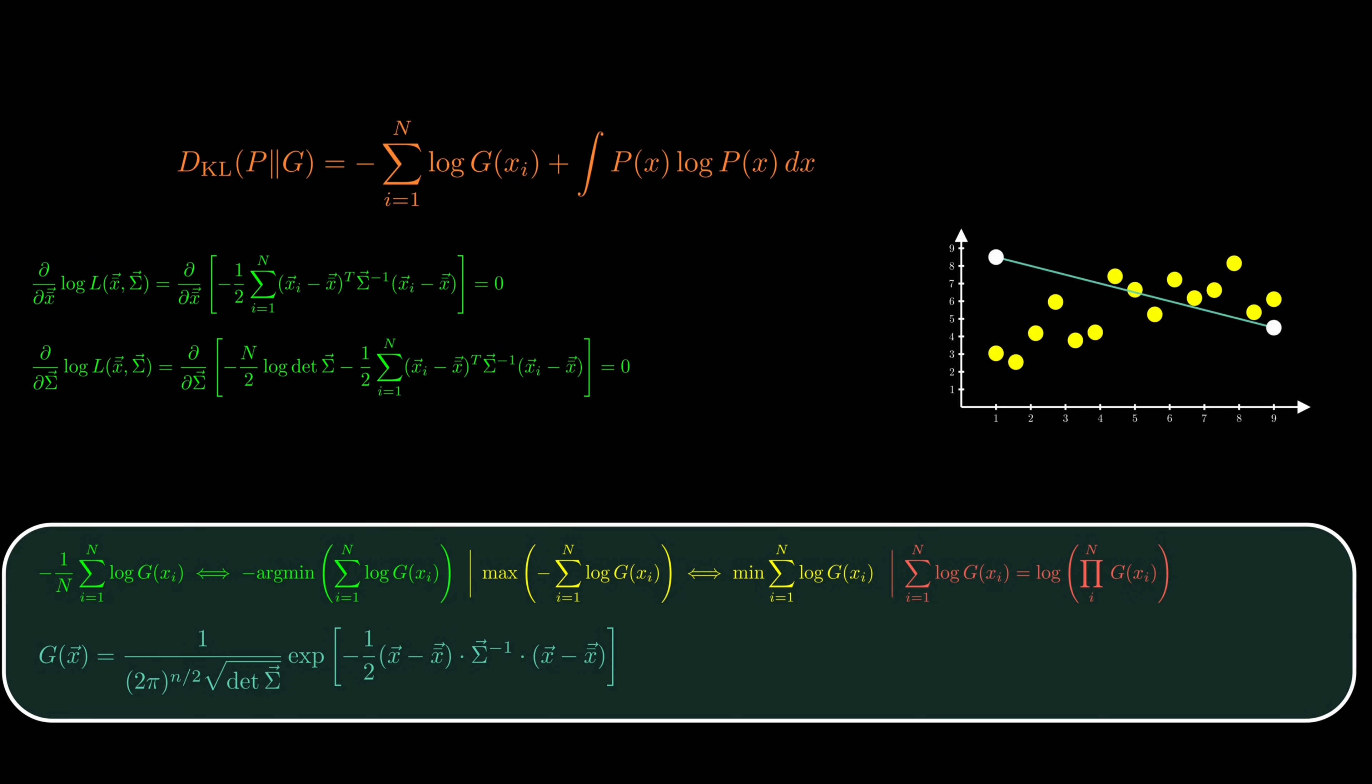However, for the case of linear regression, where the probability distribution is the multivariate Gaussian distribution, analytic solutions do exist. Here are the solutions to the maximization equations. The first equation is the empirical mean of the columns of the data set, and the second equation is the empirical covariance of the data set.